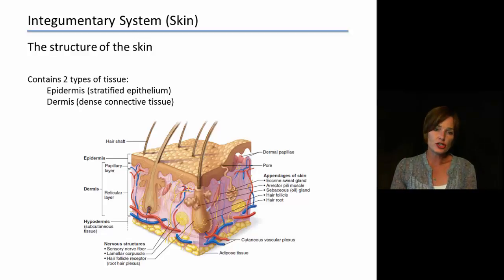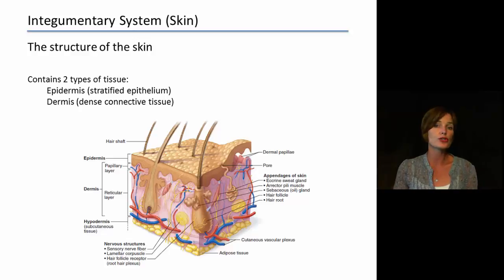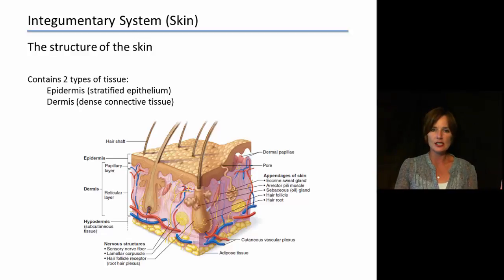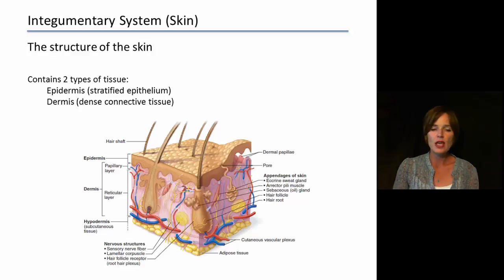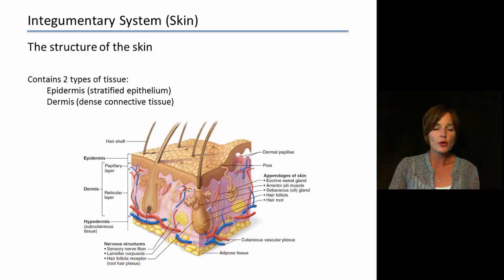Looking at the structure of the skin, it is basically composed of two layers or two types of tissue. We have the epidermis on the outermost part of our bodies, and then just inside that we have the dermis. The epidermis is stratified layered epithelium, and the dermis is dense connective tissue. We can get a good overview of these tissues in the picture shown, but we want to look more closely at the different layers and cell types found in these two layers.